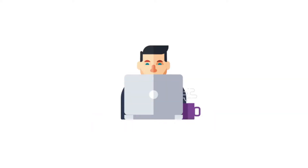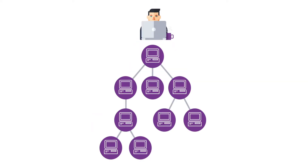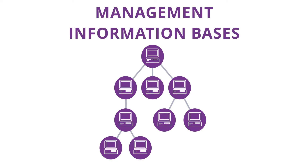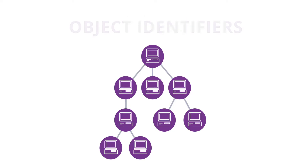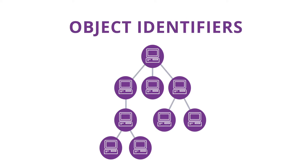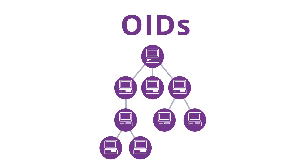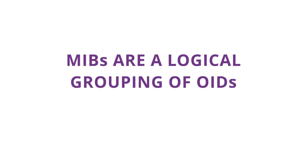Data collected by the managers through SNMP has a tree-like hierarchy. The data tree has multiple branches called management information bases, or MIBs. MIBs are used to define a group of data points that can be collected from specific agents. These groups of data points are called object identifiers, or OIDs. So a MIB is a logical grouping of OIDs.